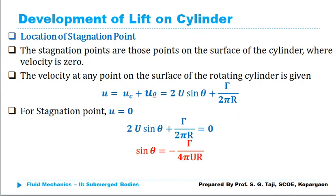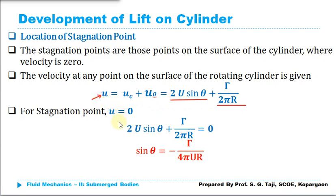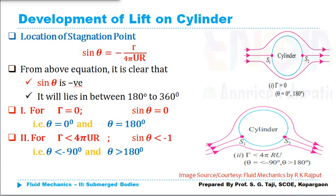We will now see how to locate the stagnation points. Using the velocity equation, we can locate them. The velocity at any point on the surface of the rotating cylinder is given by: minus 2U sin(θ) plus γ/(2πr). By setting the velocity equal to zero — since stagnation points are where velocity is zero — we get: 2U sin(θ) + γ/(2πr) = 0, which gives sin(θ) = −γ/(4πr).